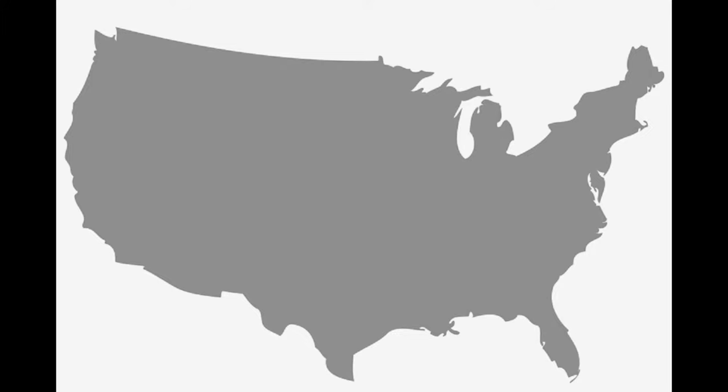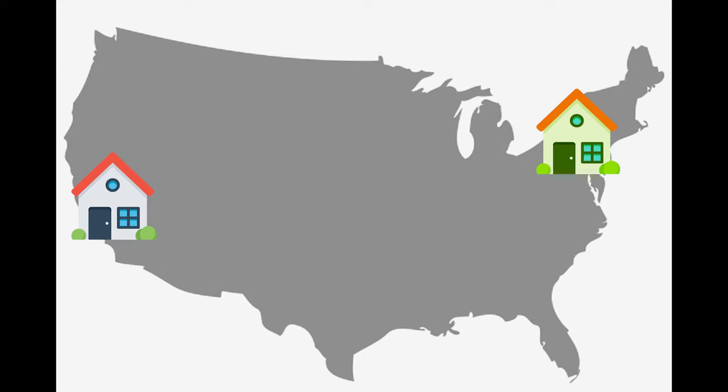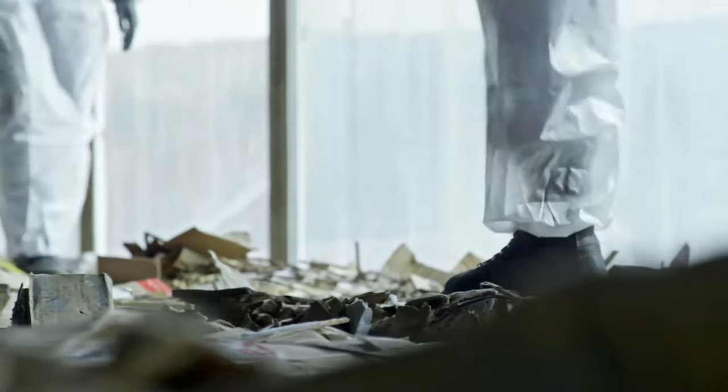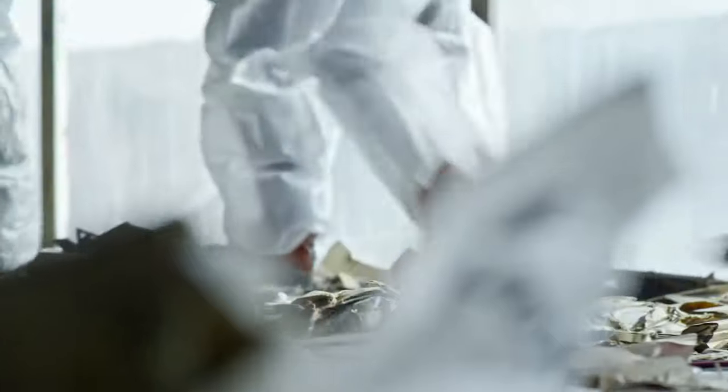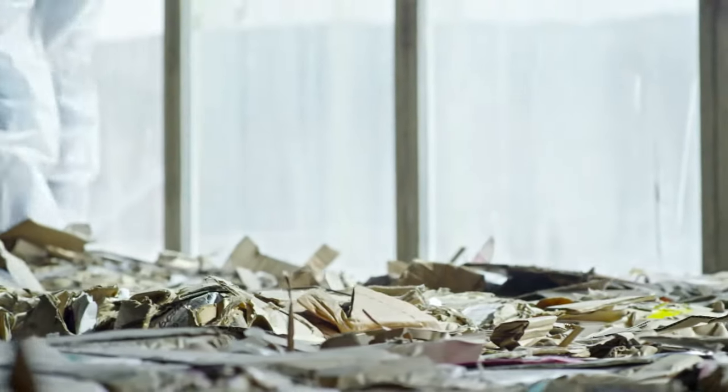Here's an example I frequently give when talking about risk to clients: earthquakes. I have a building on the east coast and a building on the west coast. There are different building codes in California than in Florida. Not building to earthquake codes could be a vulnerability. In California, that vulnerability of not being equipped to handle earthquakes is a much higher risk than in Florida, where the likelihood of an earthquake is a lot less.